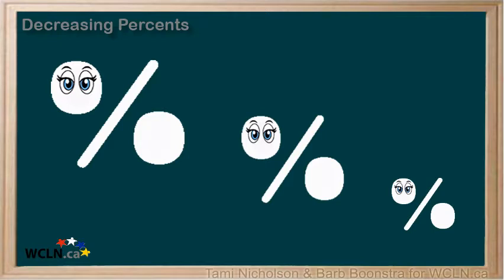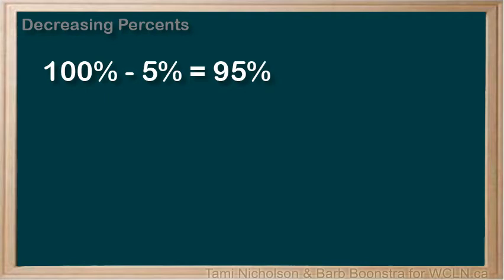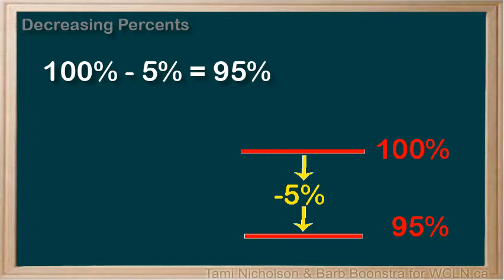Let's talk about decreasing percents. Remember, 100% of a number equals that number. If something has a decrease of 5%, then it is 100 minus that percentage. So a decrease of 5% becomes 100 minus 5%, or 95% of what it was. The percentage is now less than 100.